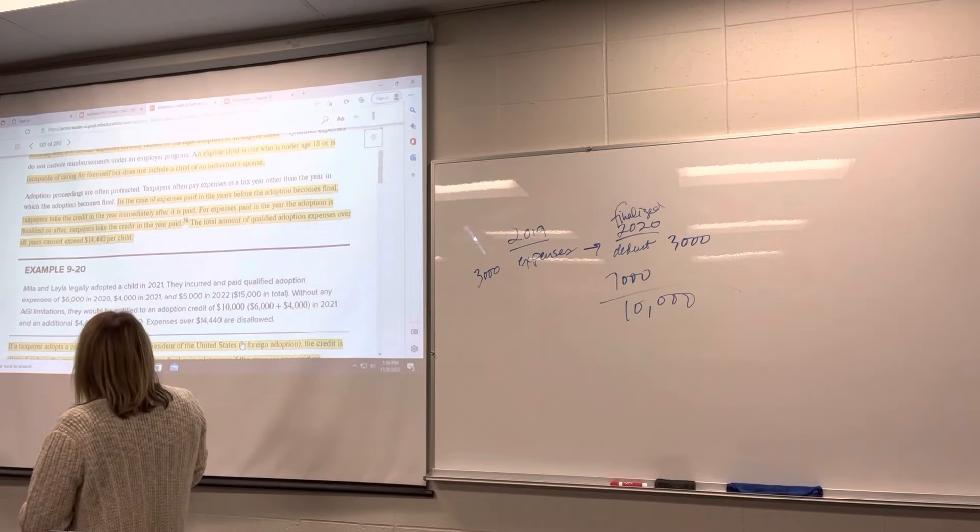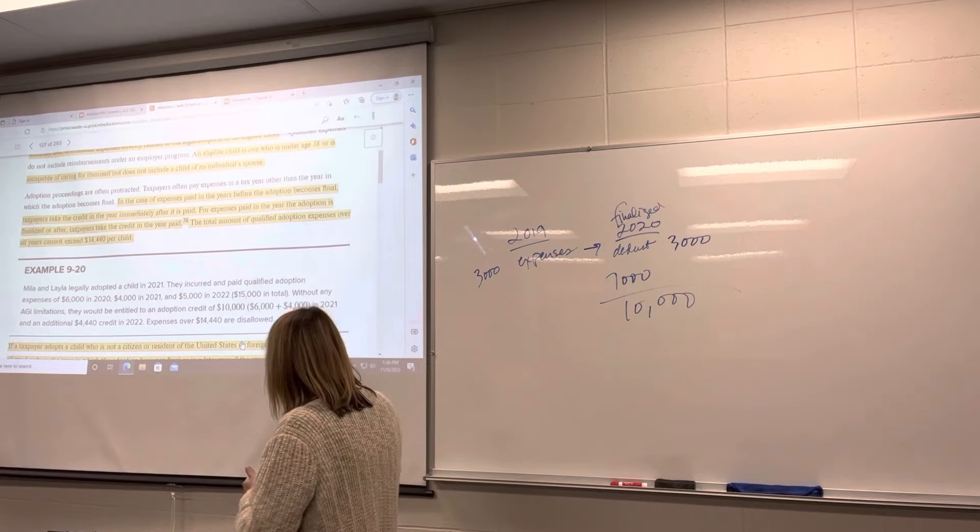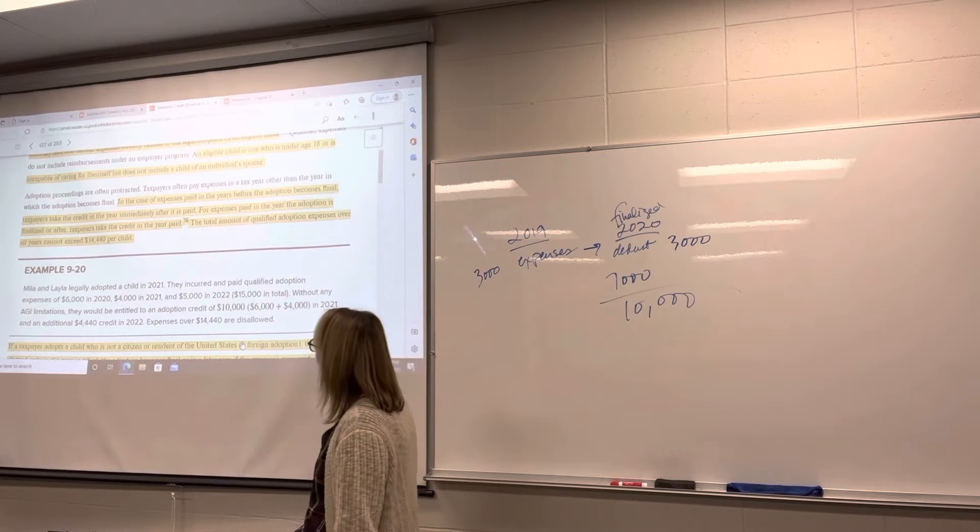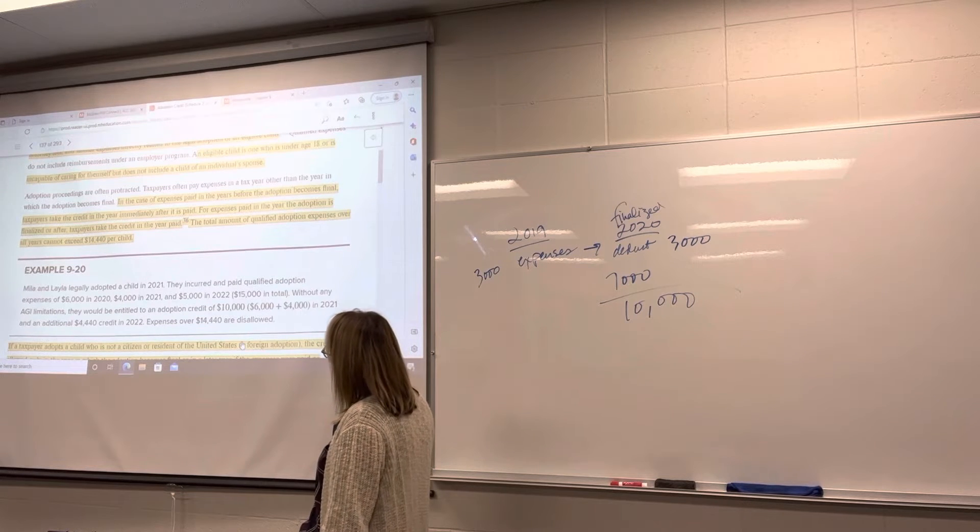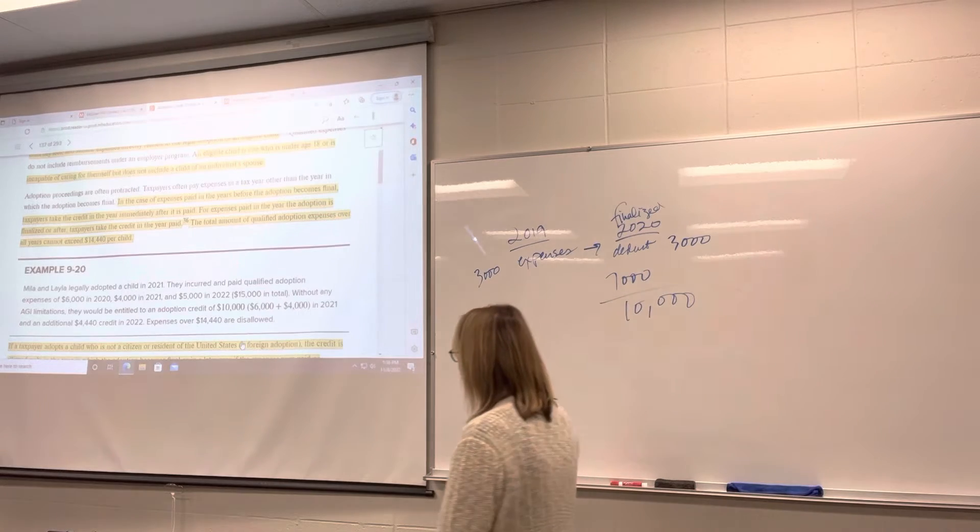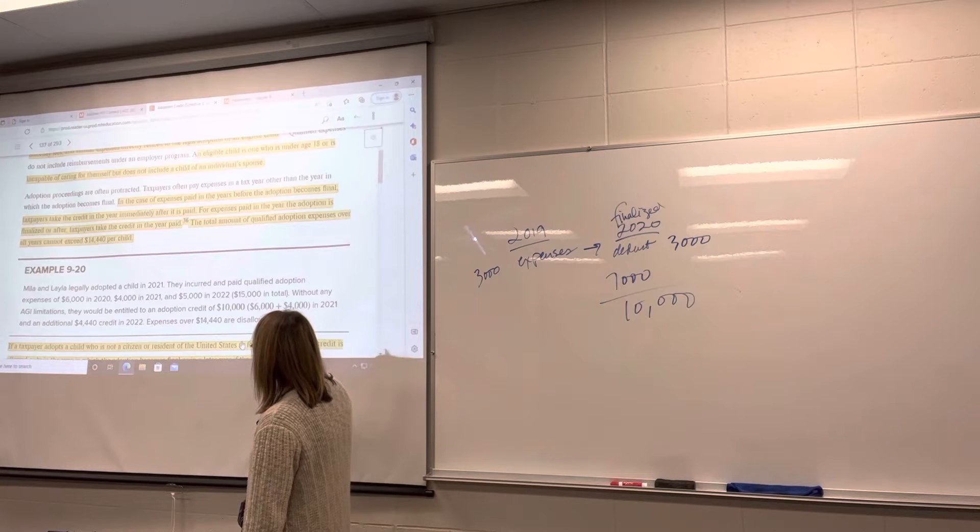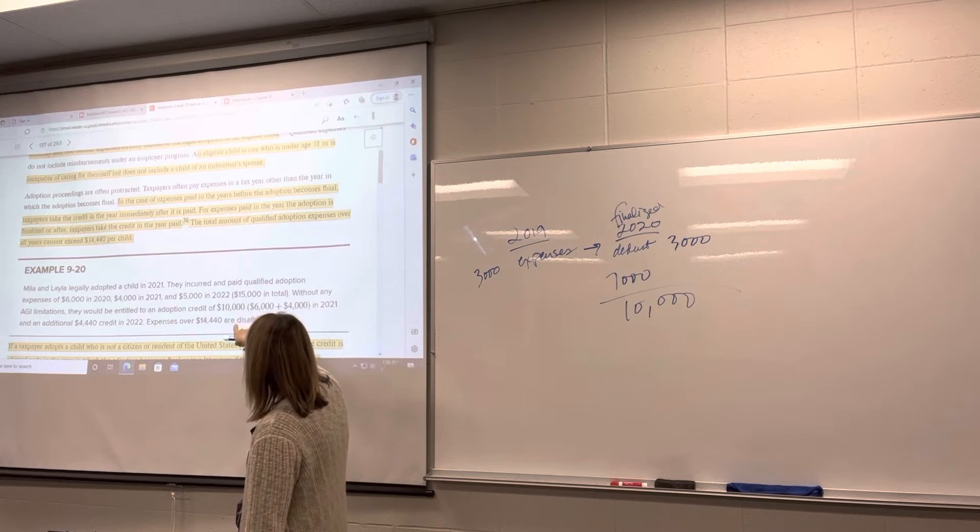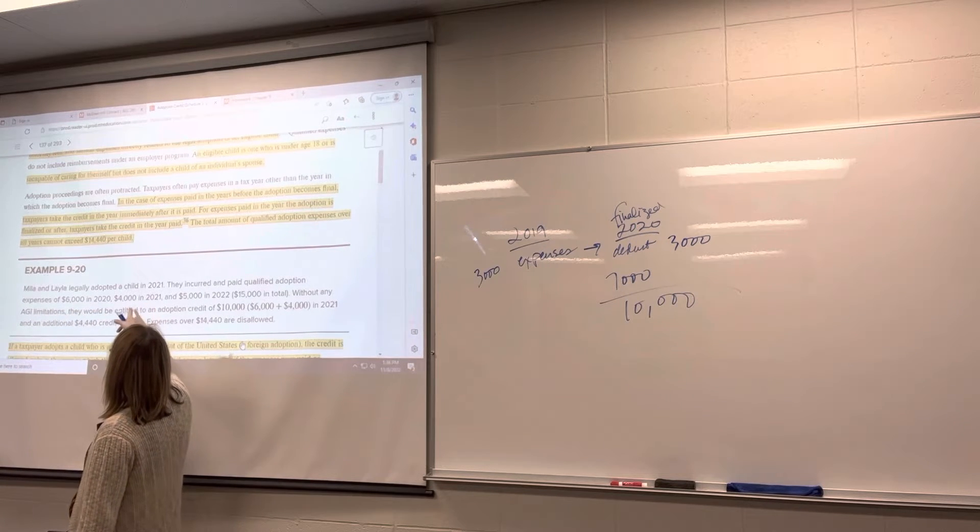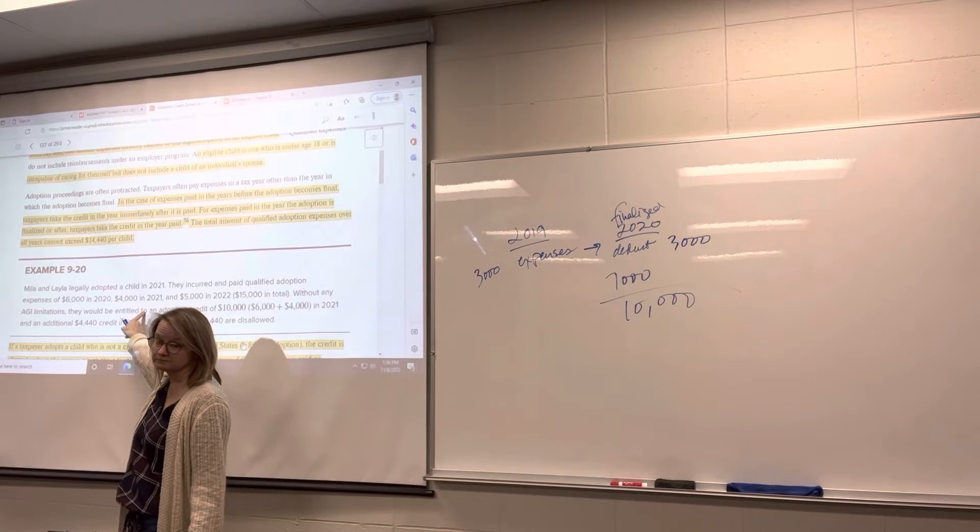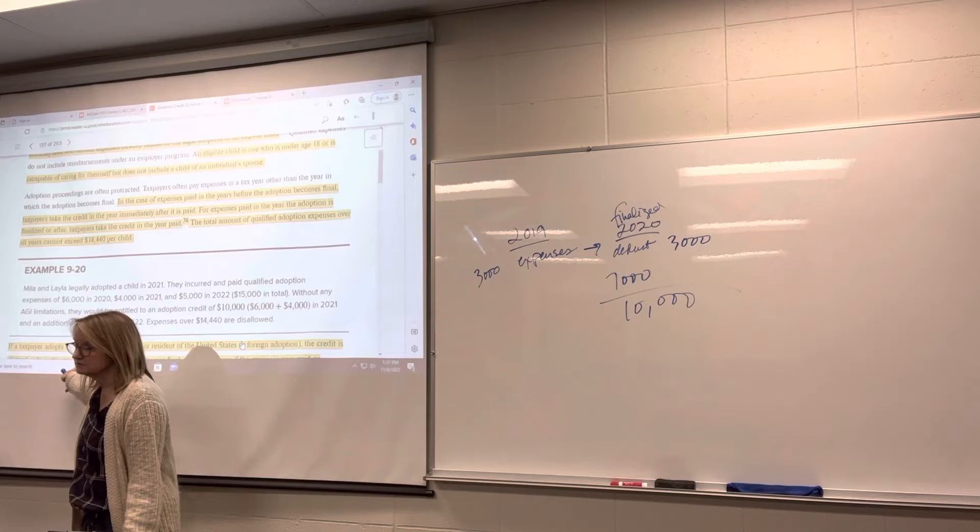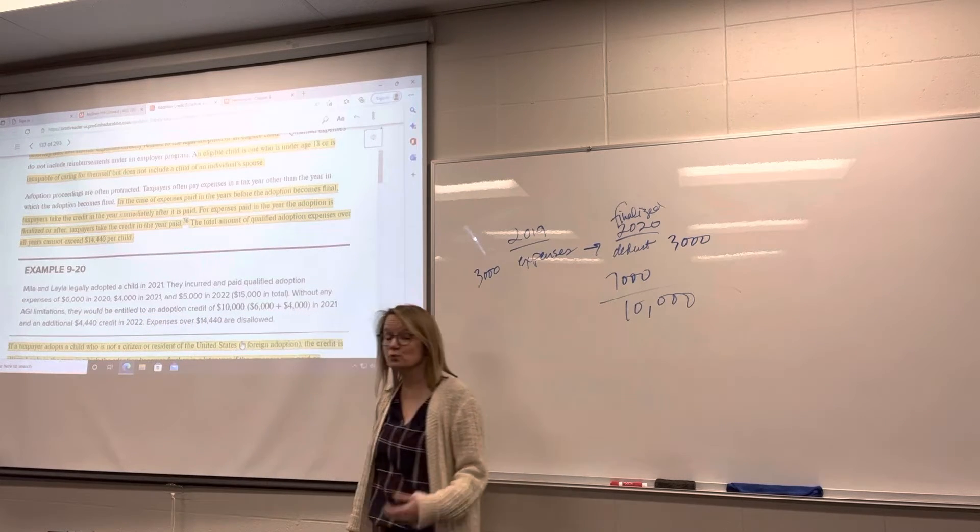We'll look at this example. Myla and Layla adopted a child 2021. They incurred and paid adoption expenses, $6,000 in 2020, $4,000 in 2021, and $5,000 in 2022. In this case, they had some expenses after the year after the adoption was final. $15,000 total. They'll get to take the $6,000 from 2020 and $4,000 from 2021. They take that in 2021. That gets carried forward for $10,000. They've only got $4,440 left of that credit, so that would be taken in 2022 when they're actually incurred.